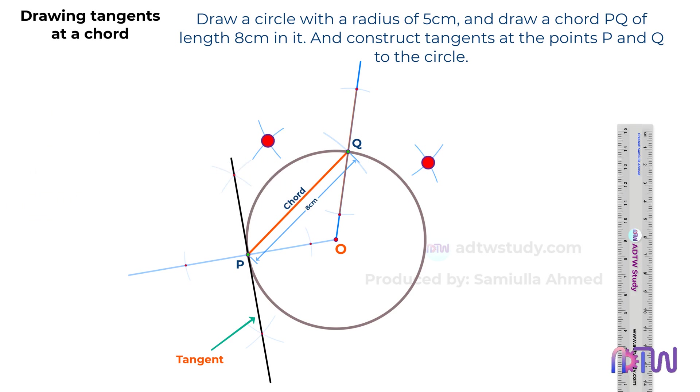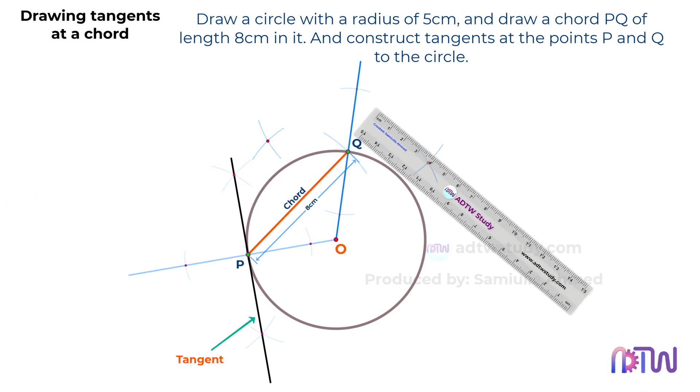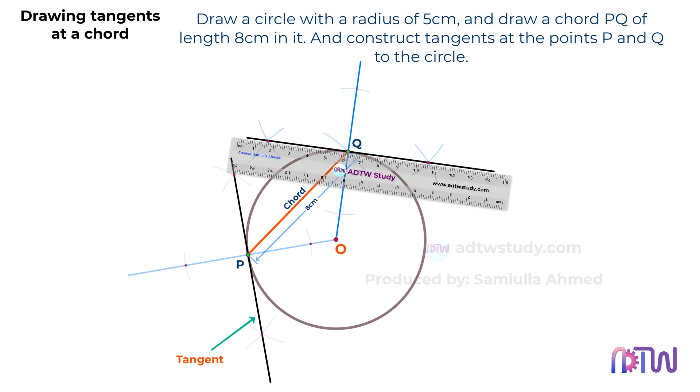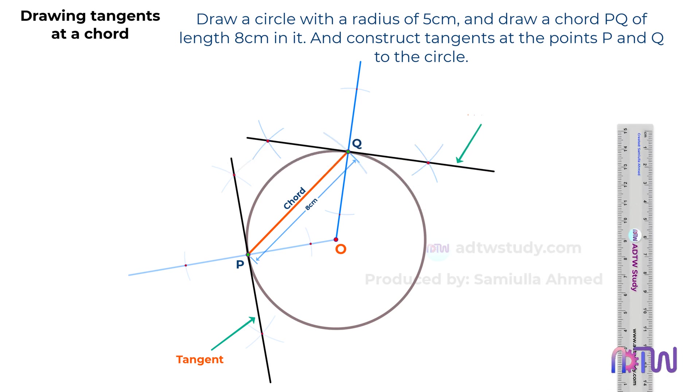Finally, connect the points where these arcs intersect with a straight line. This line will form the tangent at point Q.